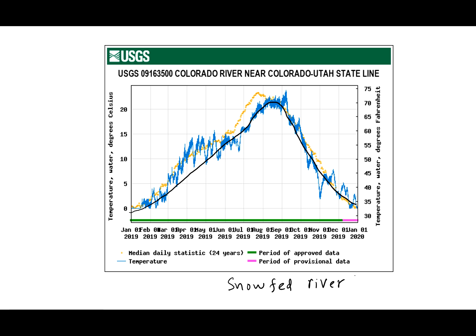Whenever the temperature rises in summer, you can see the flow increases, and as the temperature falls, the flow goes down. You also see these intermediate spikes, which are responding to actual rainfall events taking place during that time. Otherwise, when there is no rainfall, the flow responds to temperature: when temperature rises, the snow melts and flow increases, and when the temperature drops, there is less flow in the stream. This is a snow-fed river.